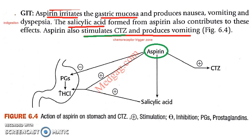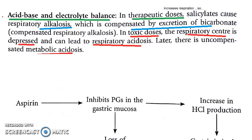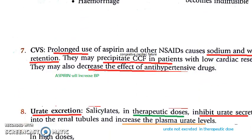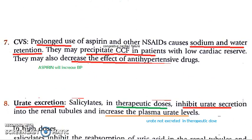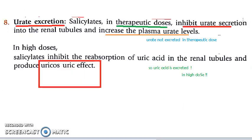To revise the mechanisms other than the intended ones: GIT irritation causes nausea, vomiting, and dyspepsia. For acid-base balance, therapeutic doses cause respiratory alkalosis while toxic doses cause respiratory acidosis. In the cardiovascular system, prolonged use increases BP due to sodium and water retention. And the uricosuric effect occurs only at high doses, enabling excretion of uric acid.